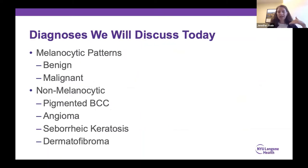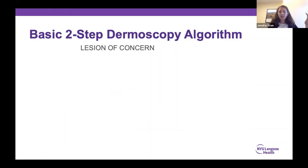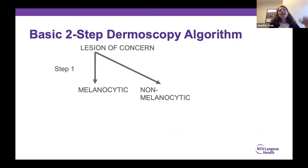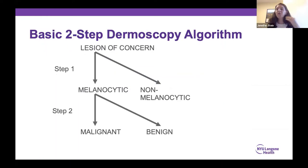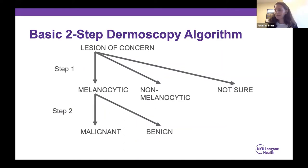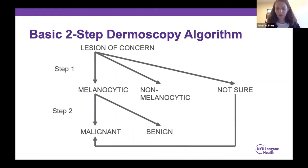Today we'll cover melanocytic patterns — benign moles compared to melanomas — and then my four favorite high-yield non-melanocytic patterns: pigmented basal cells, angiomas, seborrheic keratoses, and dermatofibromas. There is a basic two-step algorithm. Step one: is the lesion melanocytic — mole or melanoma category — or is it non-melanocytic? This branch point is critical because it's what puts melanoma in your differential. Whenever you're not sure at any branch point, always assume the worst case scenario — that you're looking at a melanoma — because that's what you don't want to miss.